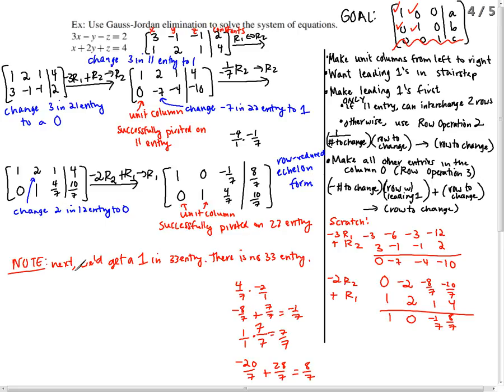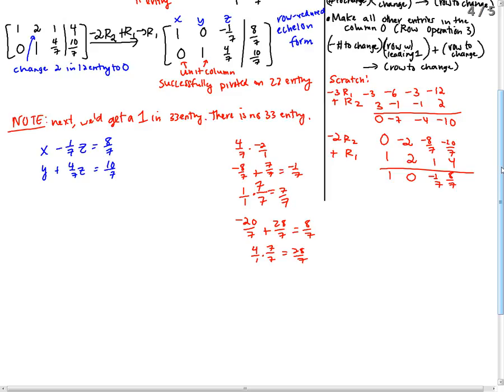So I can just read off my answers. Remember, this was the x column, the y column, the z column. So I have x minus 1 over 7 z equals 8 sevenths. And I have y plus 4 over 7 z equals 10 sevenths. But we want an answer, x equals stuff, y equals stuff, z equals stuff. So we need to modify this a little bit. If you notice, both of these equations have z's in them.